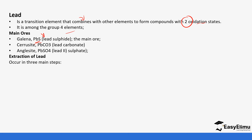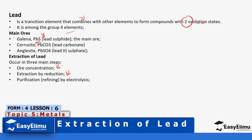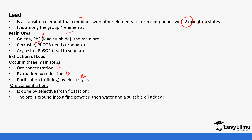Lead is extracted in three steps: concentration of the ore, reduction of the concentrated ore, and then purification or refining, since the product obtained is not pure. This is contrary to zinc, which had two methods of extraction. For lead it undergoes these three processes. Ore concentration is done by froth flotation.